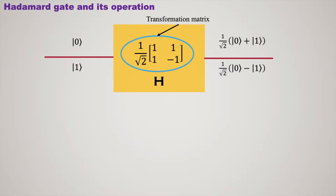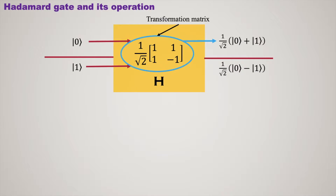When we apply the Hadamard operation on ket 0, it turns into (ket 0 + ket 1) / √2, which is halfway between ket 0 and ket 1. If we apply the Hadamard operation on ket 1, it turns into (ket 0 − ket 1) / √2, which is also halfway between ket 0 and ket 1.